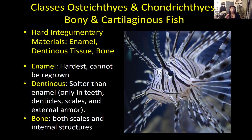This is the first place where hard integumentary materials show up — ones that aren't flexible, not soft, and also non-living. Enamel, dentinous tissue, and bone are the three most common. Enamel is the hardest material, can't be regrown, and covers the surface of your teeth. Dentinous material is made of dentine, softer than enamel, and you see it in vertebrate teeth, a type of scale called a denticle, true scales like what you see on fish and reptiles, and external armor. Bone isn't just found in the skeleton of Osteichthyes — it can also be found in their scales, and is actually the weakest of the three materials.